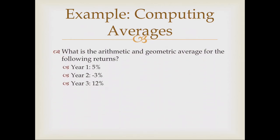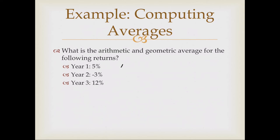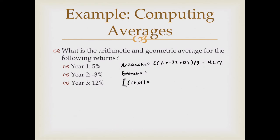Example: what are the arithmetic and geometric averages for returns of 5%, −3%, and 12%? The arithmetic average is (5% + (−3%) + 12%) / 3 = 4.67%. For the geometric average, take (1.05)(0.97)(1.12), raise to the one-over-3 power, then subtract one, giving 0.0449 or 4.49%. The geometric average is slightly lower than the arithmetic average, as expected, because it is the compound growth rate taking into consideration compounding year over year.